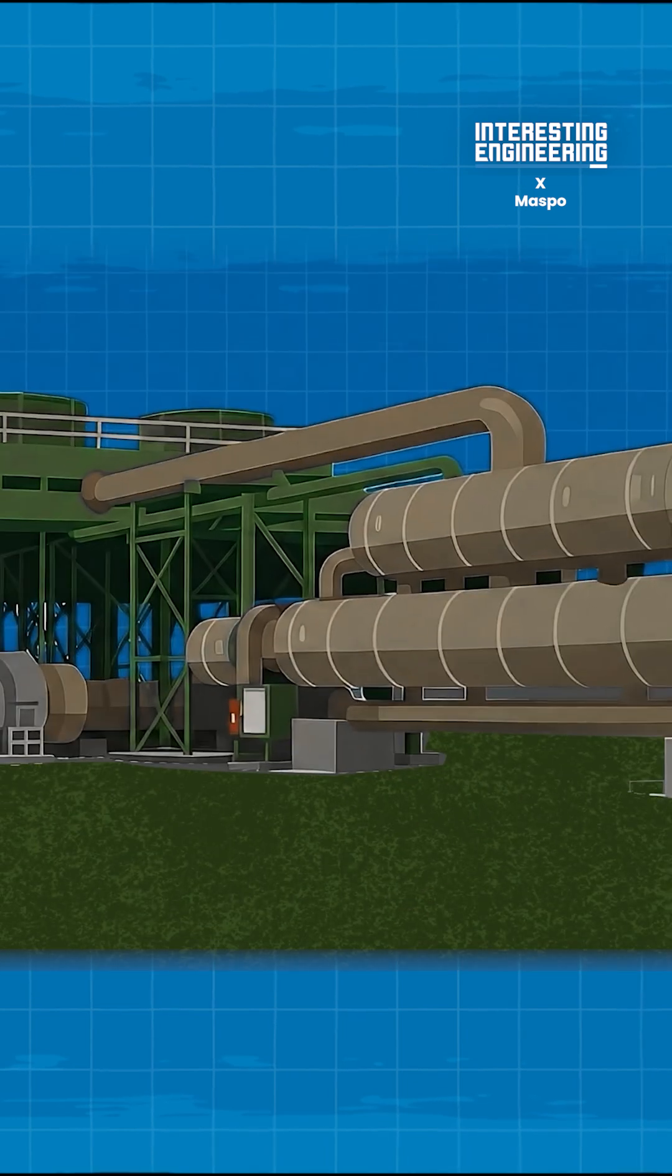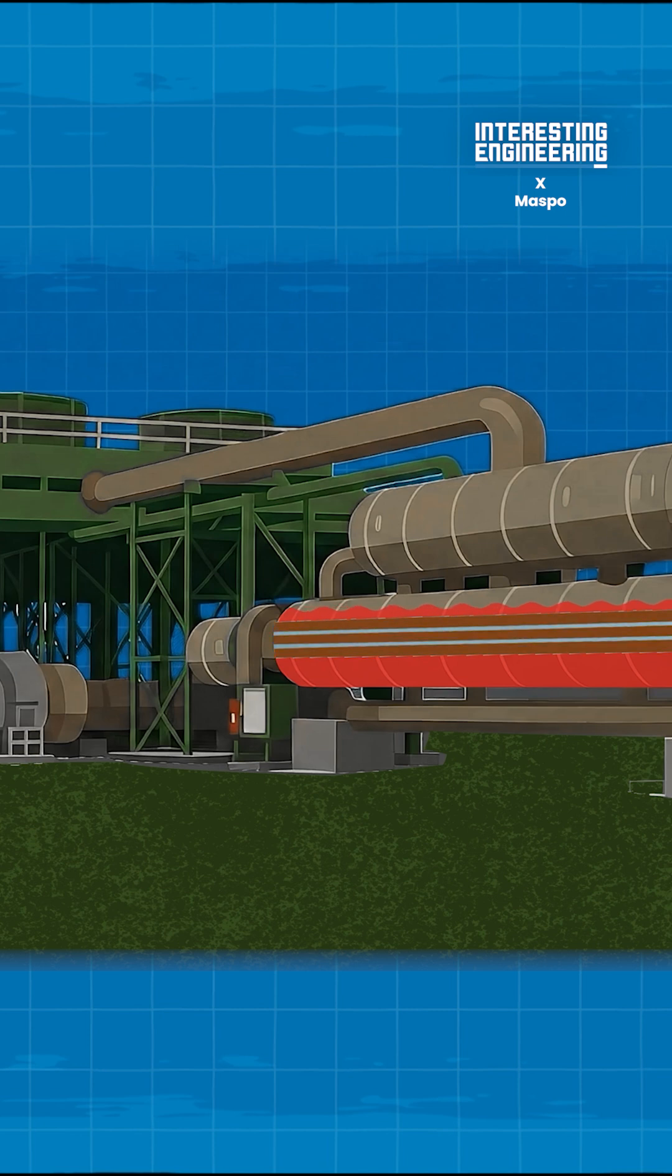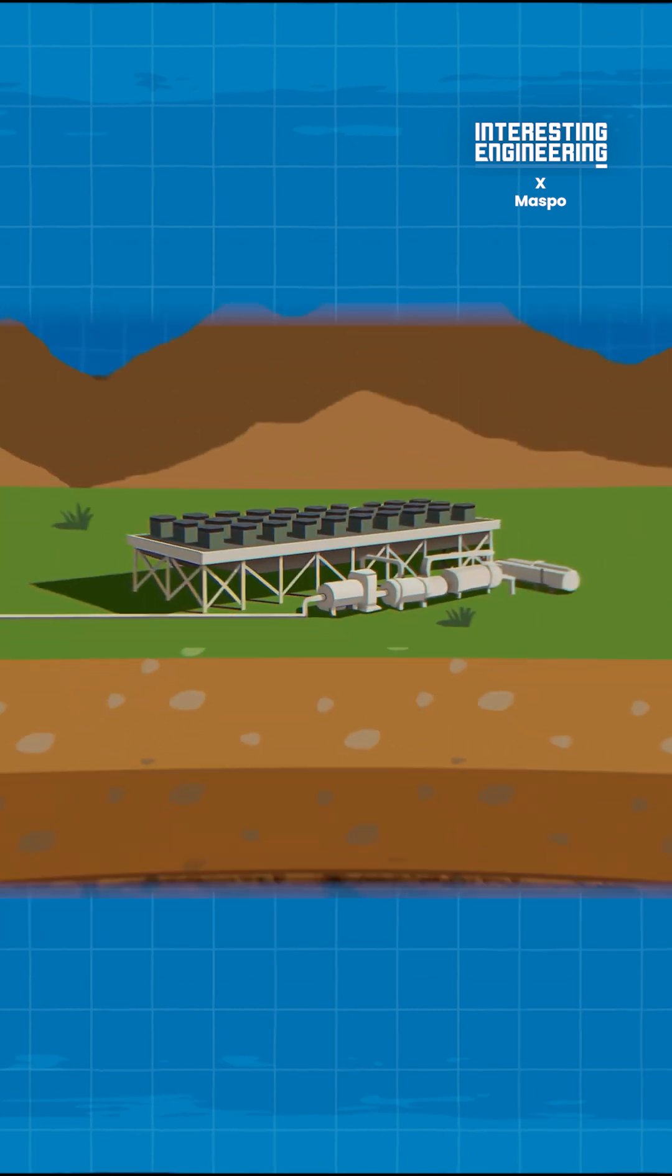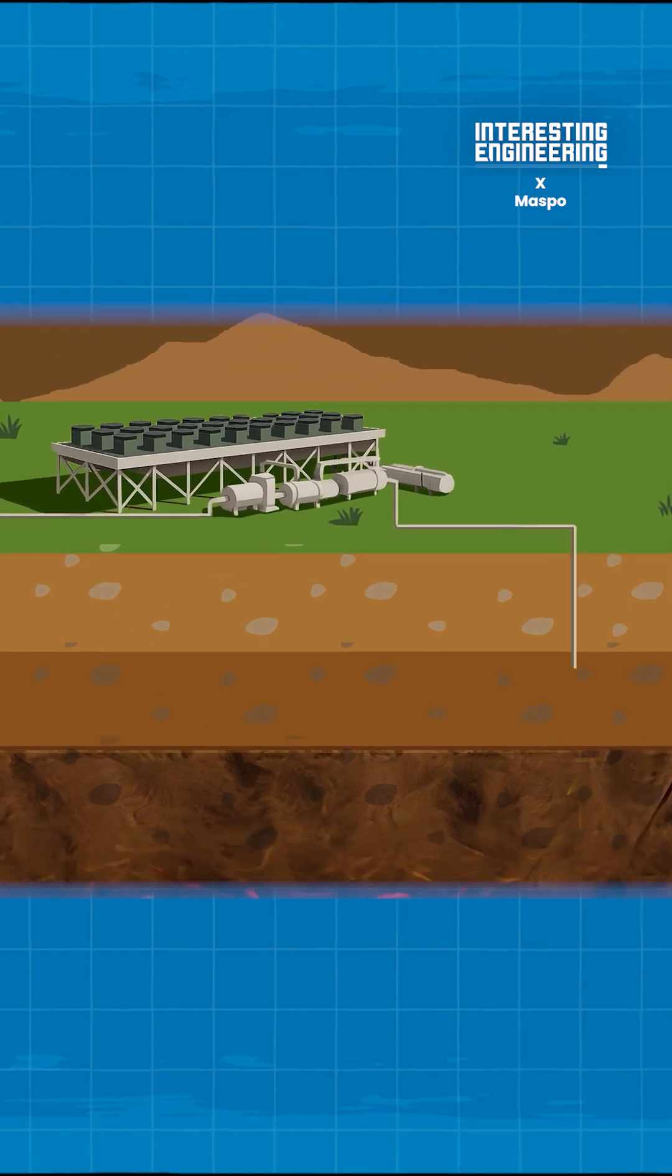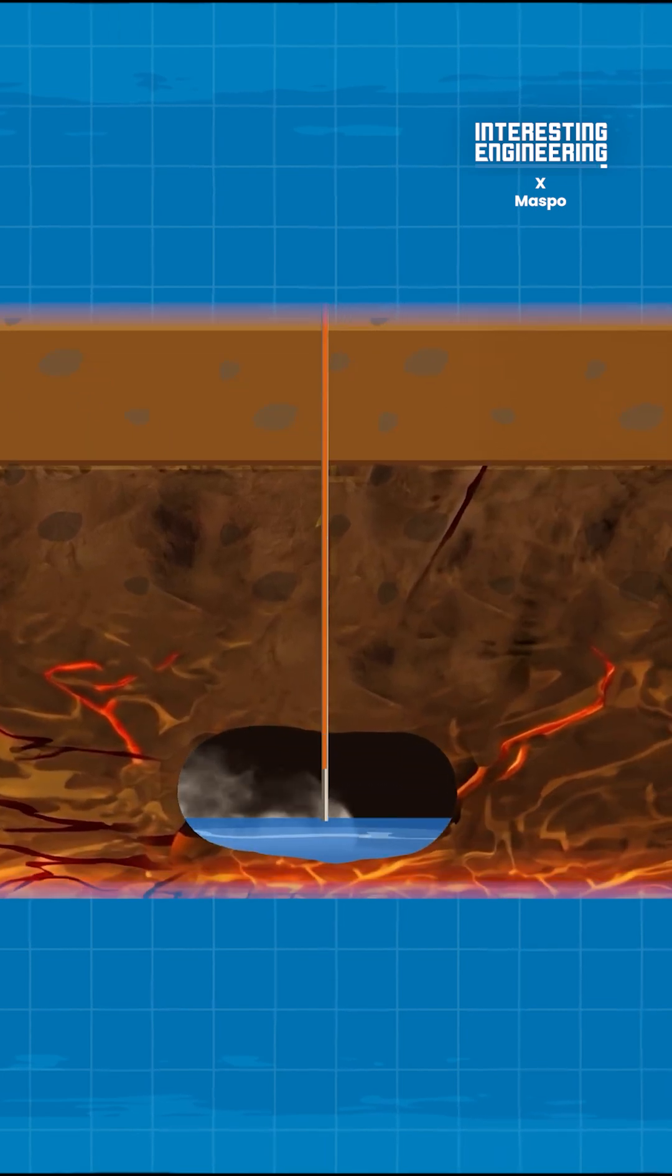Meanwhile, the used geothermal fluid is also used to heat the liquid motive fluid before it goes back into the vaporizer, helping the process along. Once the geothermal fluid has cooled, it's injected back into the ground through injection wells, safely returned to nature.